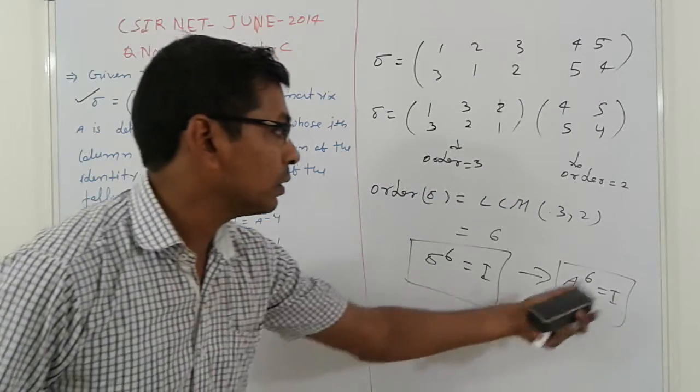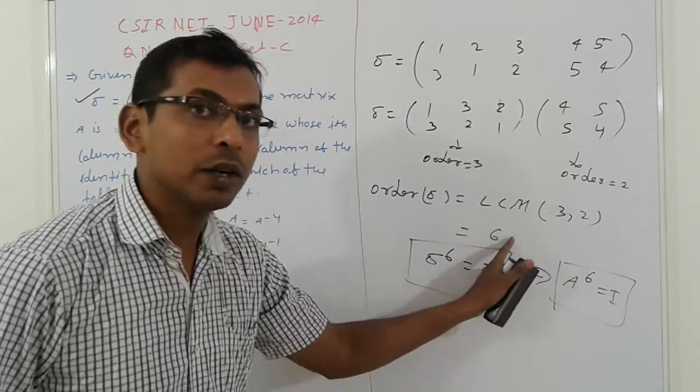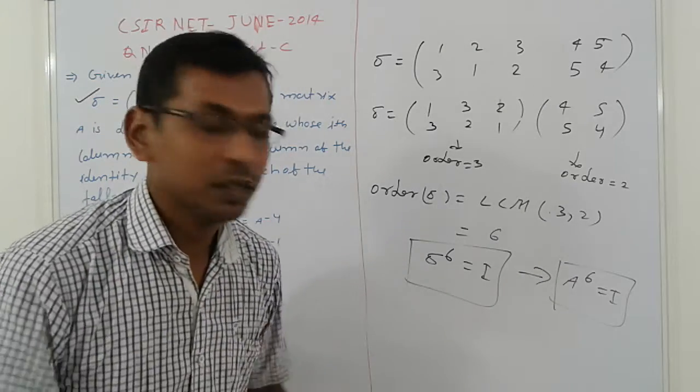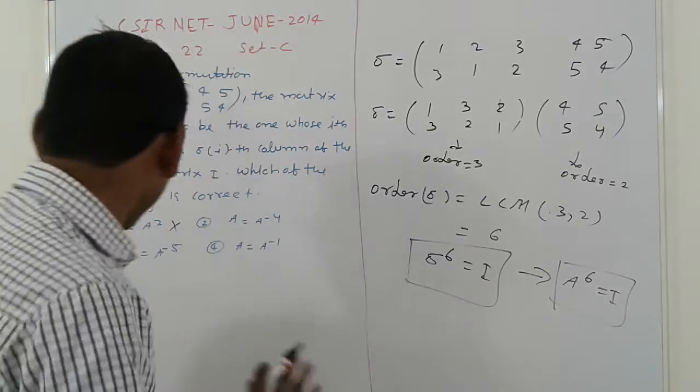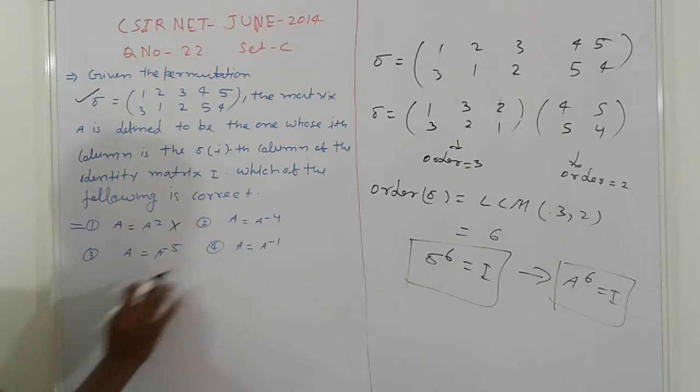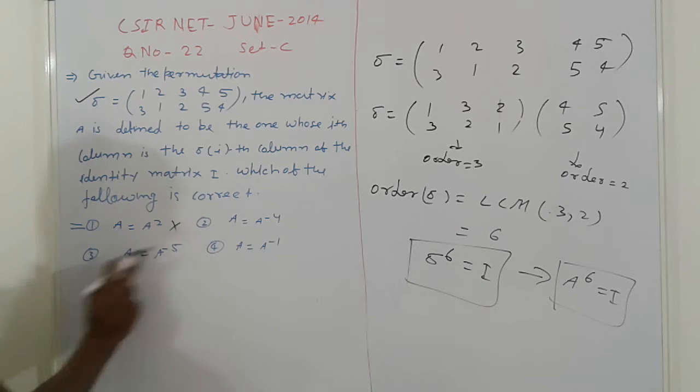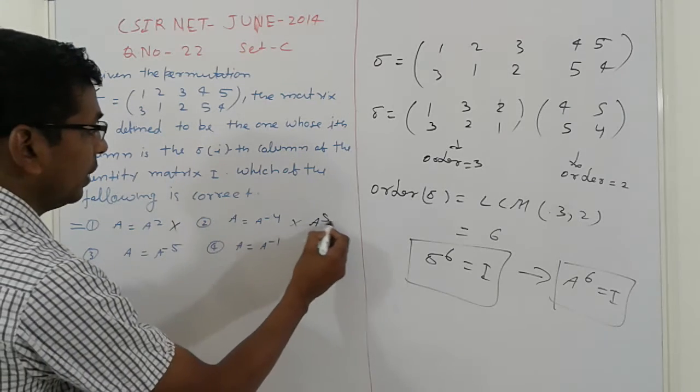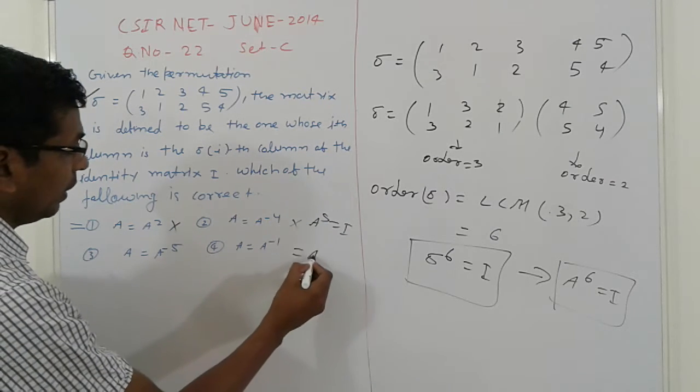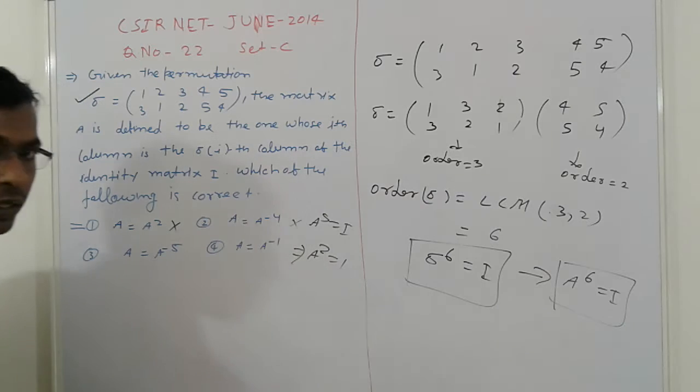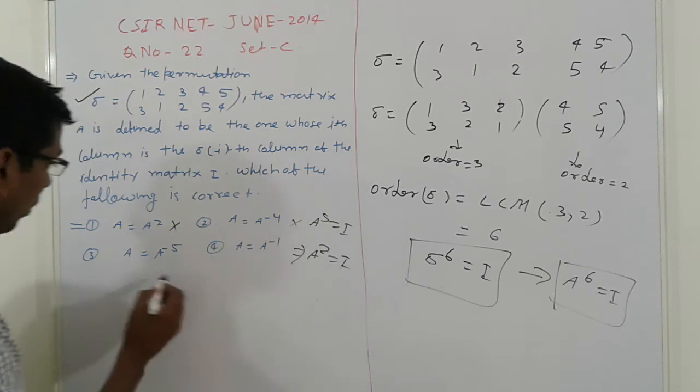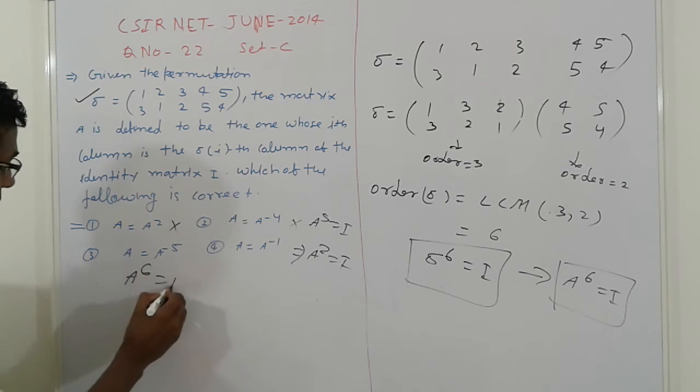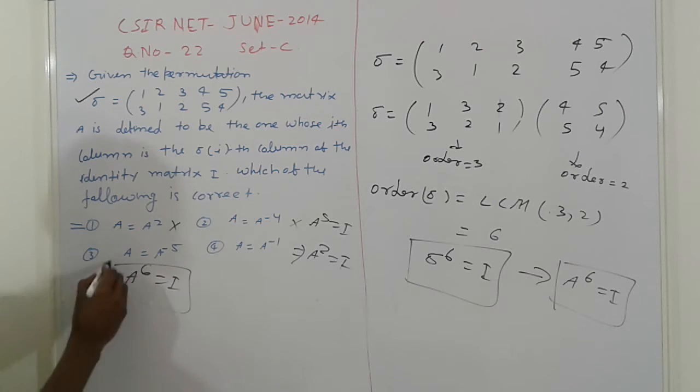This is order. Means, whatever maximum power order will be equals identity matrix. This represents I. But who follows a raised to 6? Here. So a raised to 5 equal to I. That is wrong. This is a raised to 5 equals I. Here a square equal to I, identity. So it goes wrong. And here, this is a raised to 6 equals I. That is here. That is, third option is correct.